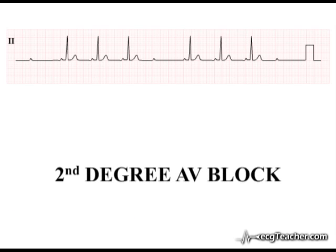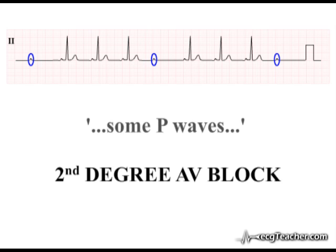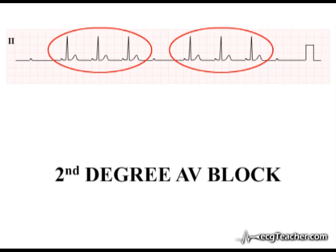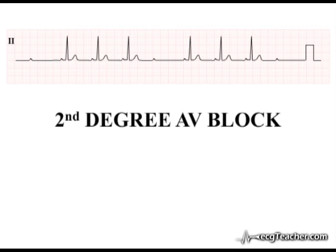Second degree AV block is defined by failure of conduction of some P-waves into the ventricles. The periodic failure of transmission of atrial depolarisation into the ventricular muscle mass, with consequent absence of an associated QRS complex, creates a visual impression that the QRS complexes occur in clusters or groups. There are two major subdivisions of second degree AV block: Mobitz type 1 and Mobitz type 2.